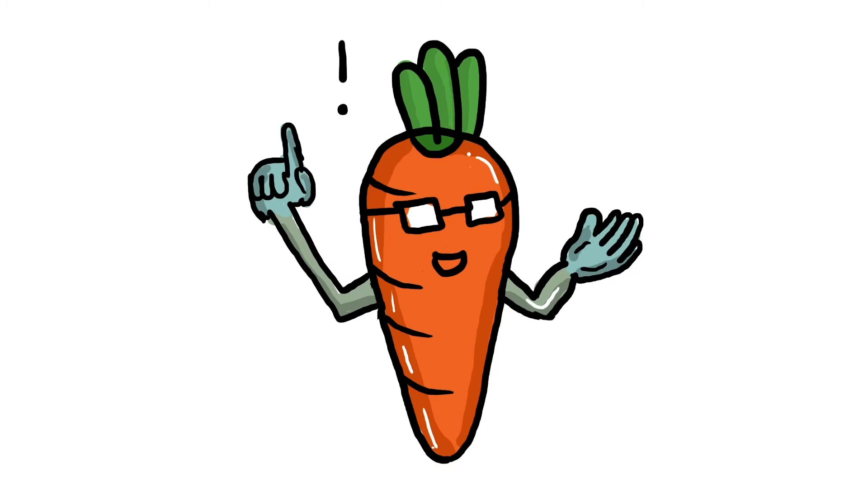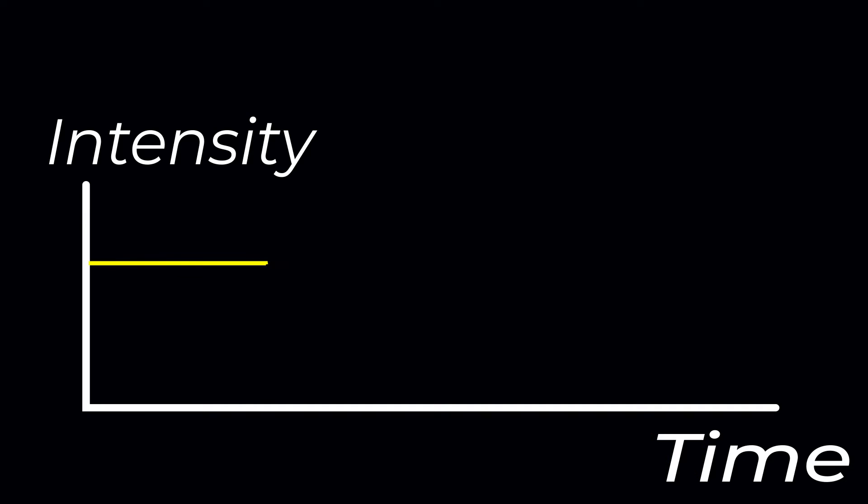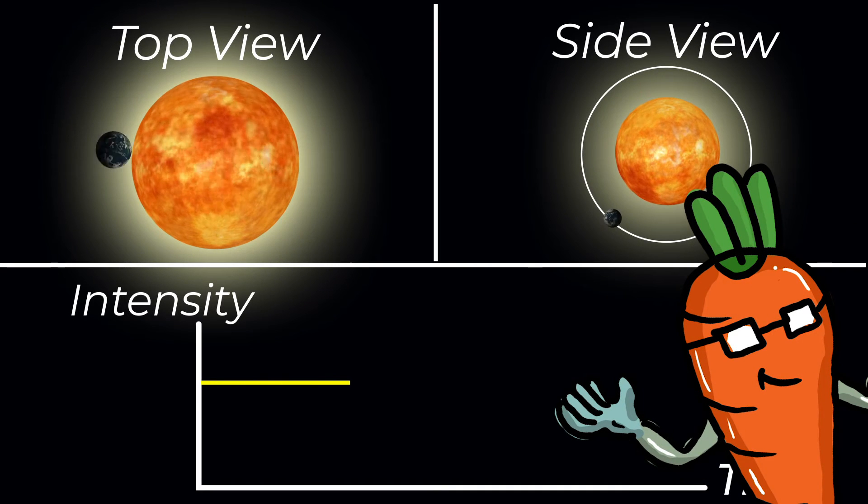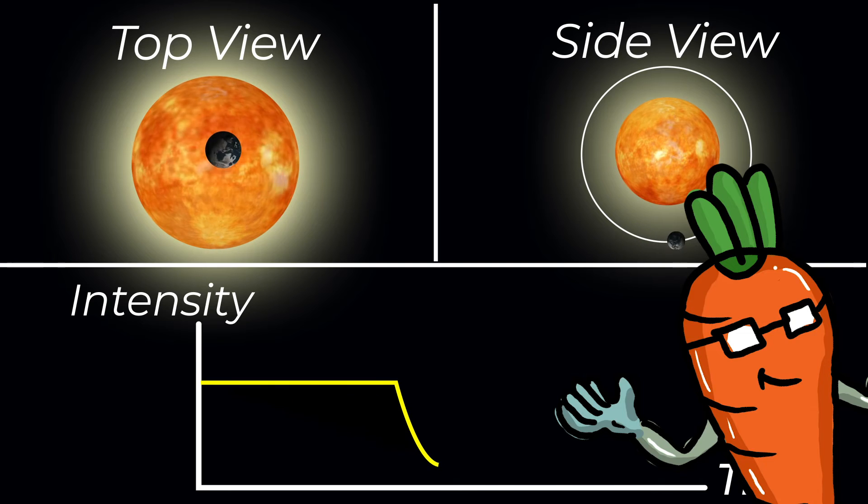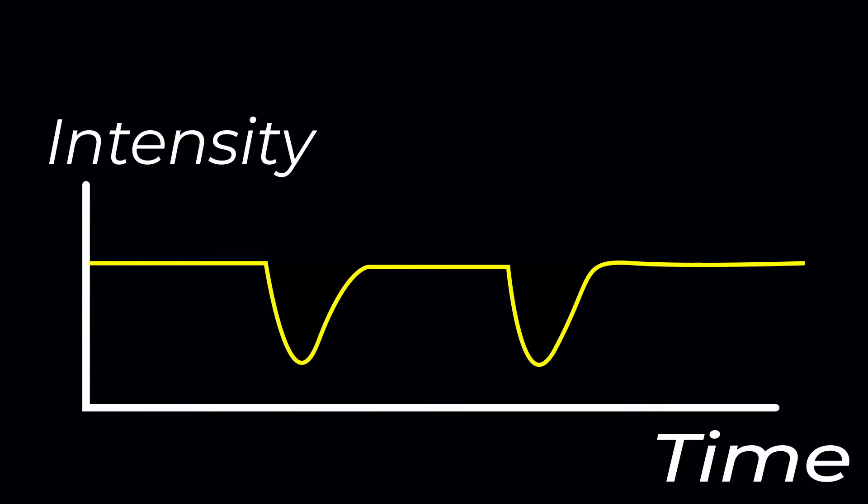But through the transit method, you can also gauge the time it takes for the planet to orbit the star. Let's look at two consecutive dips in intensity of this graph. Remember, each dip in intensity occurs when the planet comes in front of the star from your field of view. So, the time it takes for two dips in intensity is the time it takes for the planet to orbit the star once, which is the planet's orbital period, or as we call it on Earth, length of year.